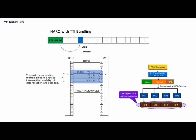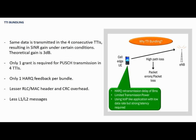So what is the principle behind this technique? The same data is transmitted in four consecutive TTIs, resulting in a SINR gain under certain conditions. The theoretical gain is 3 dB. Additionally, only one grant is required for PUSCH transmission across the four TTIs.